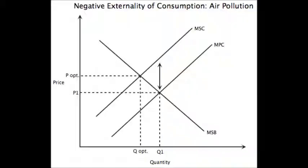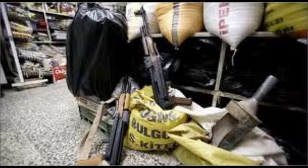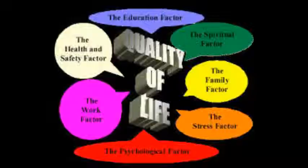Negative externalities are unintended side effects, like pollution, as you see here in this graph. They have monetary value. Another limitation is underground activity — economic activity that is not reported to the government, like the black market.